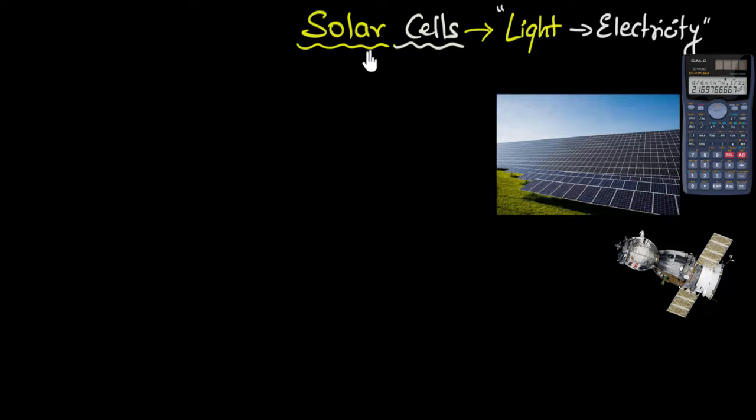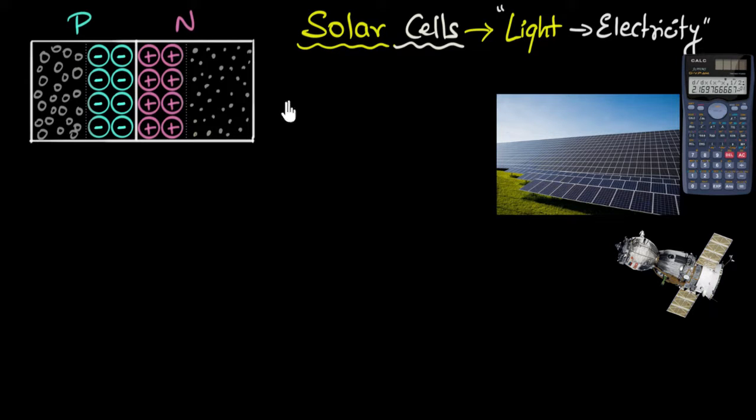But how do they work? Well, at the heart of a solar cell is a PN junction. So let's quickly recap. We've seen that a PN junction is basically a single semiconducting crystal